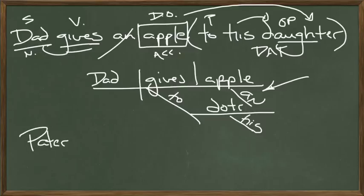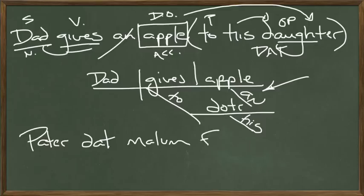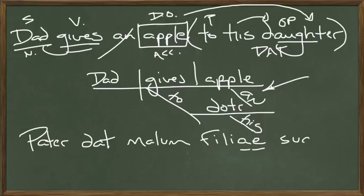Pater dat malum — he gives an apple. Now we put daughter in the dative case. Daughter is filia — that's where Spanish gets 'hija,' and where we get 'filial duty' in English, meaning daughter-like or son-like. It's first declension; to make it dative, we simply add an -i: filiae. Pater dat malum filiae — his daughter: suae. Watch that ending — the possessive pronoun adjective matches. Pater dat malum filiae suae.